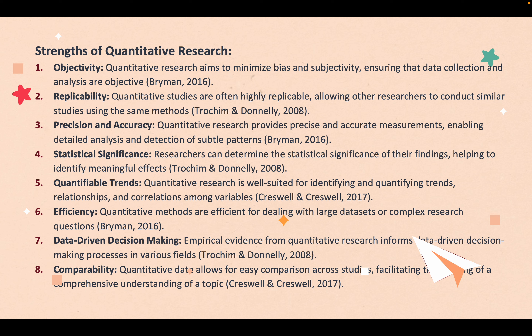Next, statistical significance: quantitative research allows researchers to assess the statistical significance of their findings. Statistical testing helps determine whether observed effects are likely due to chance or are genuinely meaningful and can be generalized to the broader population. Next, quantifiable trends: research is well-suited for identifying and quantifying trends, relationships, and correlations among variables. Statistical methods enable researchers to measure and describe these patterns, valuable for understanding cause-and-effect relationships.